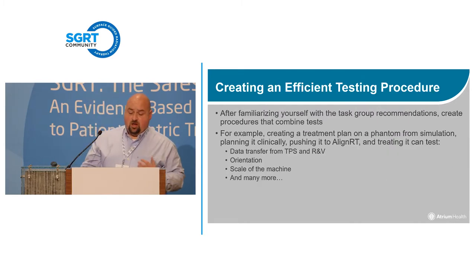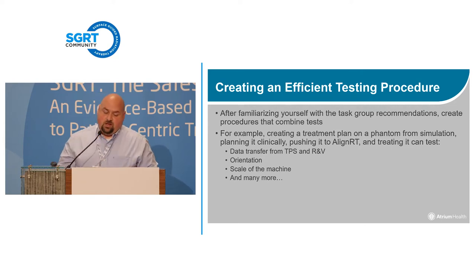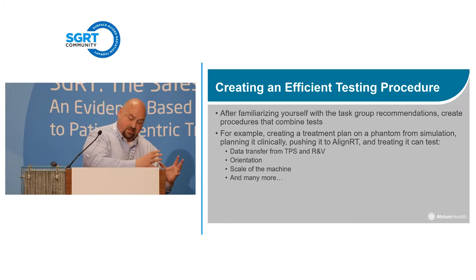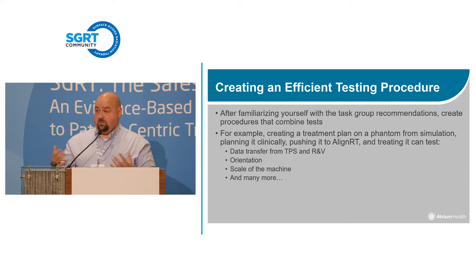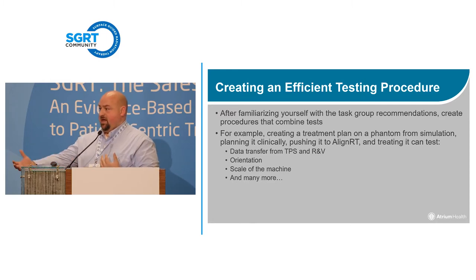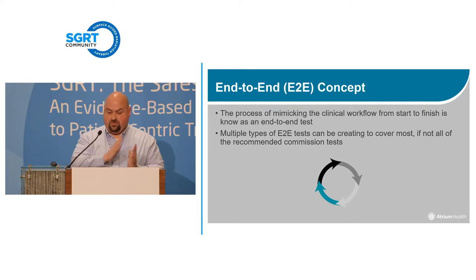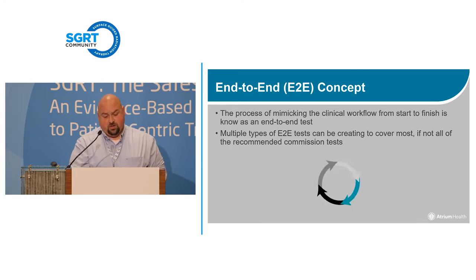A quick rundown of what TG-147 says: check integration, spatial reproducibility and drift, localization, and documentation. What's the best way to create an efficient procedure? You can combine tests in a way that makes sense, and that's where end-to-end testing is so important. You can create a test to check the sim, transfer orientation, and verify machine scale. We actually went through a scale change on two of my IX machines recently and had to adjust the AlignRT software to account for it.